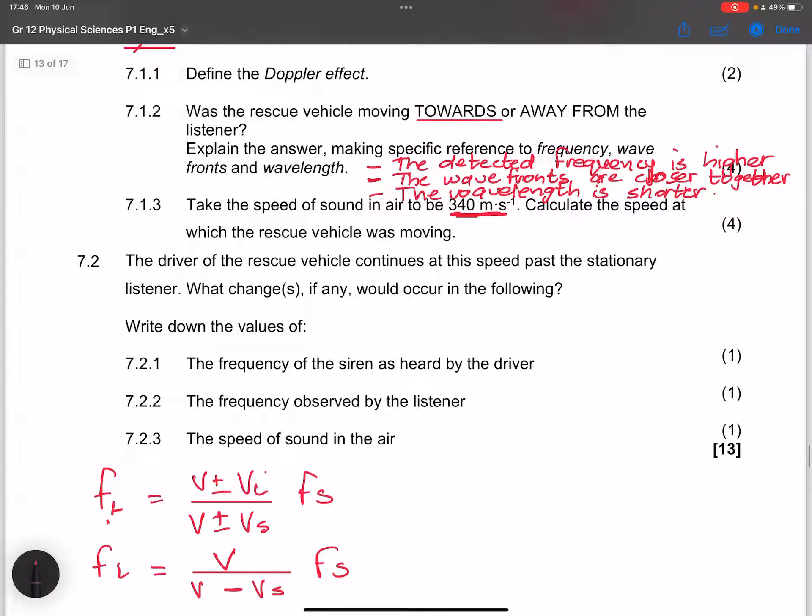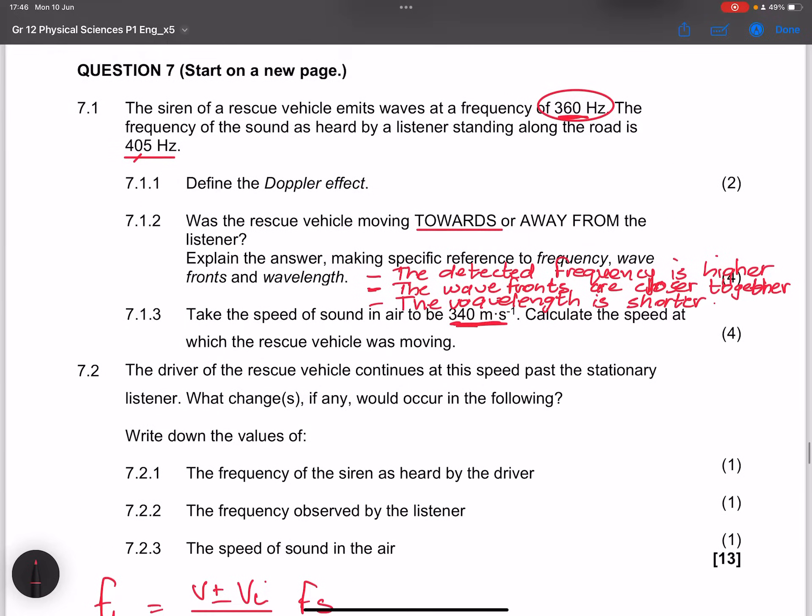So the next set of questions. They say the driver of the rescue vehicle continues at the speed past the stationary listener. What change, if any, would occur to the following? They say write down the values of. So firstly, the frequency of the siren as heard by the driver. Now remember, the driver is moving at the same speed as the vehicle. So he will hear exactly the same frequency as the emitted frequency. So that would be 360 hertz.